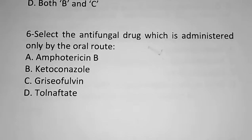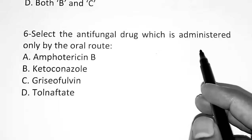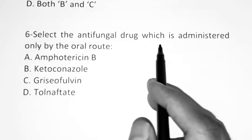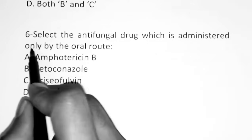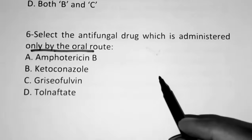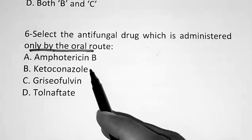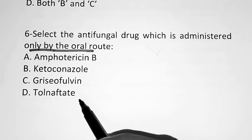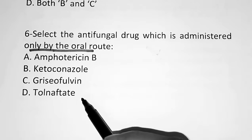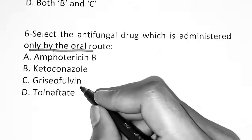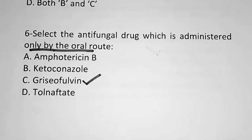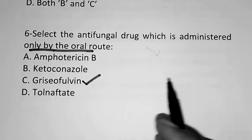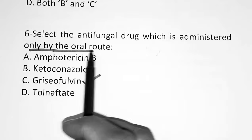The sixth question: Select the antifungal drug which is administered only by the oral route. Option A, Amphotericin B. Option B, ketoconazole. Option C, griseofulvin. Option D, tolnaftate. The correct answer is griseofulvin. Griseofulvin tablets are available in the market, and it is administered through the oral route only.